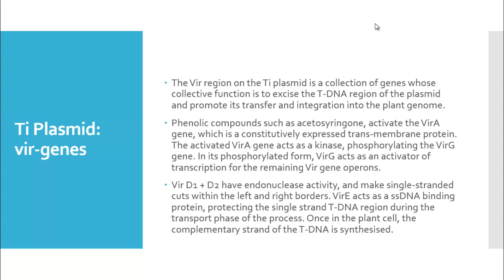Once the phenolic compounds are present, they activate the vir-A gene, which further acts as a kinase phosphorylating another gene called the vir-G gene. Once vir-G is phosphorylated, it acts as an activator of transcription for the remaining virulence genes.